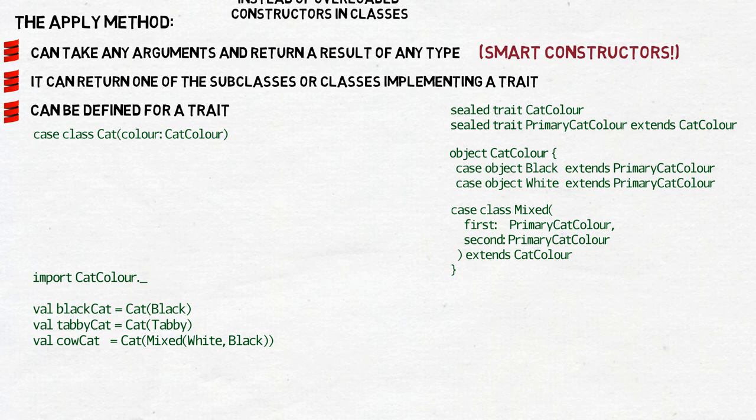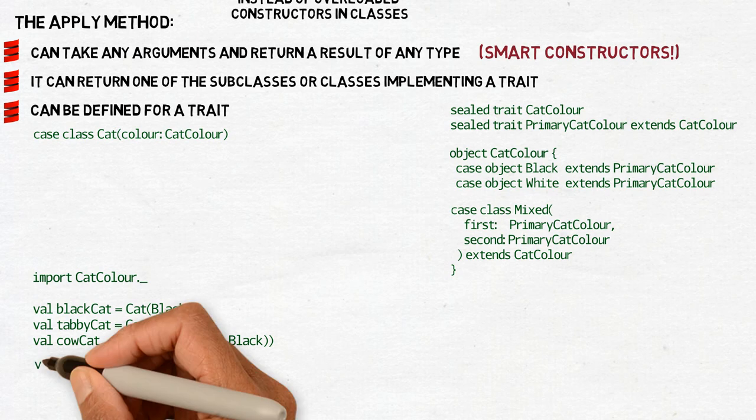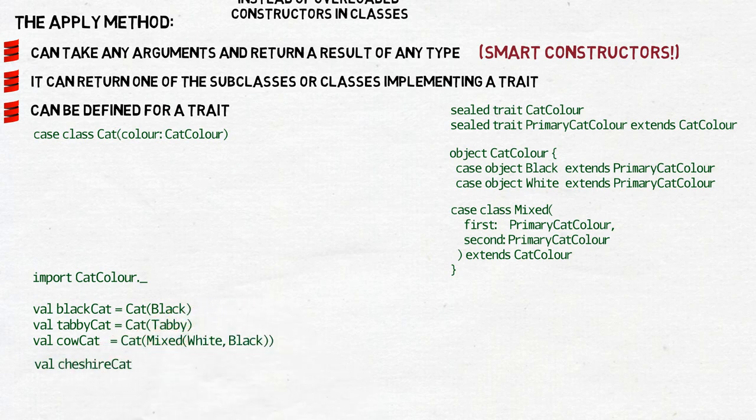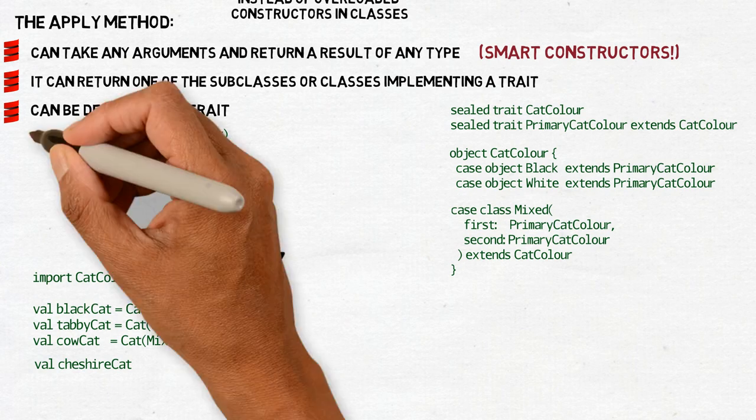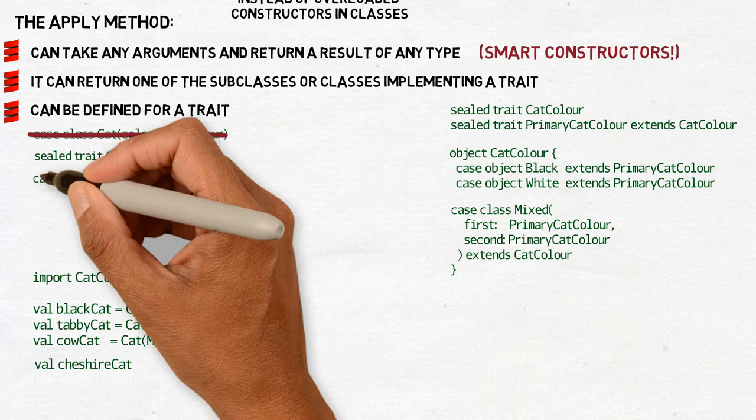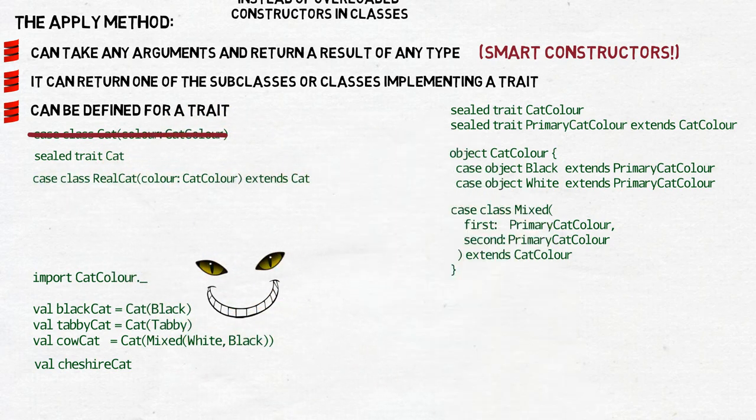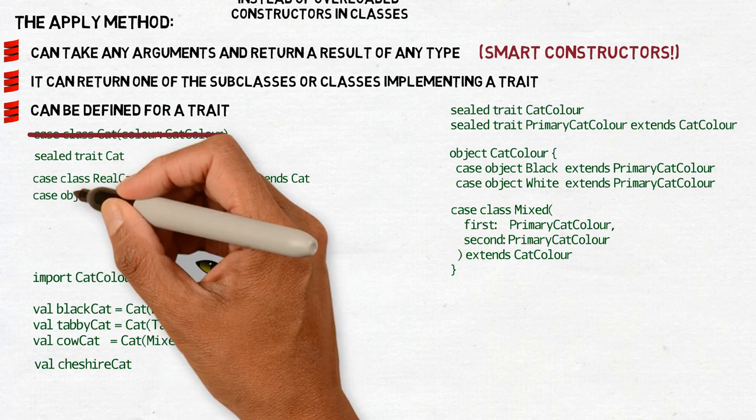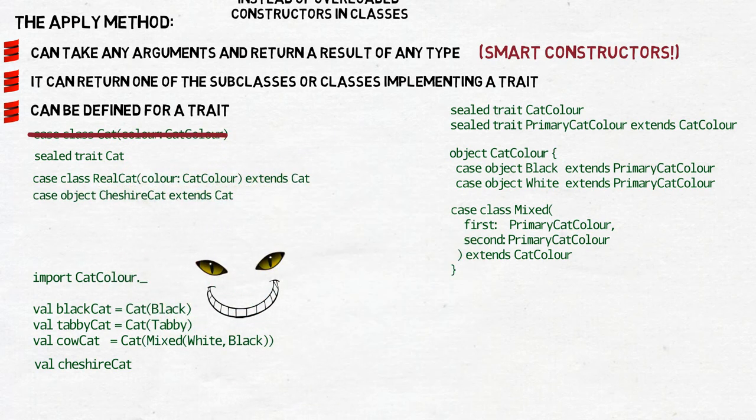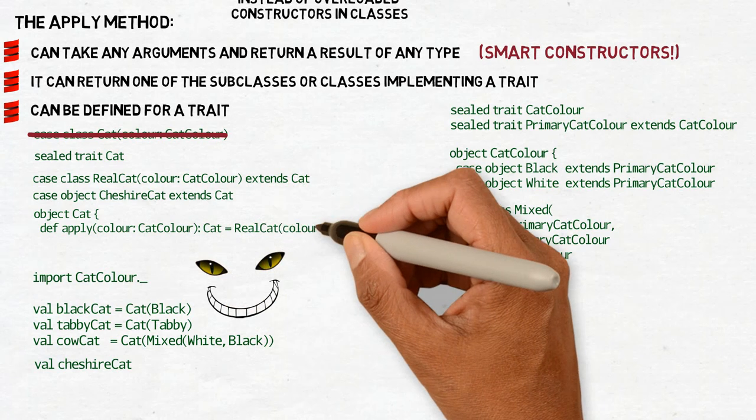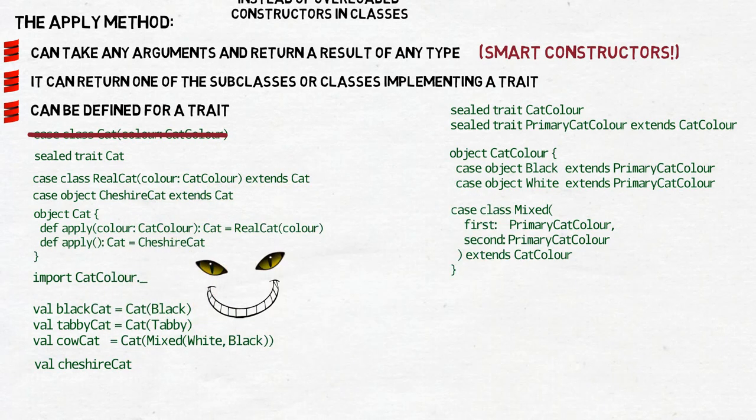But one day your manager has a brilliant idea. Let's introduce Cheshire cat, which is invisible and has superpowers. Obviously some changes in the design are needed. And here a smart constructor can be of use. So we change the cat from a class to a trait. We have a case class real cat, which extends that cat, that trait of a cat. And we have case object Cheshire cat, which also extends a trait cat, but has nothing to do with the case class real cat. Then we have apply methods, and then we have a few cats, and at the end also a Cheshire cat.